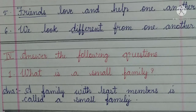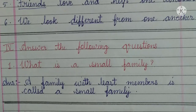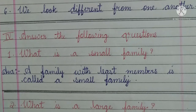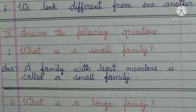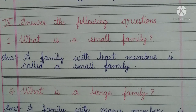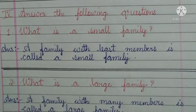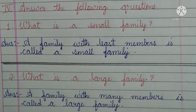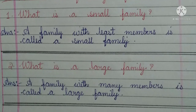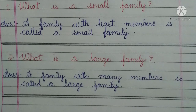Fourth main: answer the following questions. Number one, what is a small family? Answer: a family with least members is called a small family. Number two, what is a large family? Answer: a family with many members is called large family.